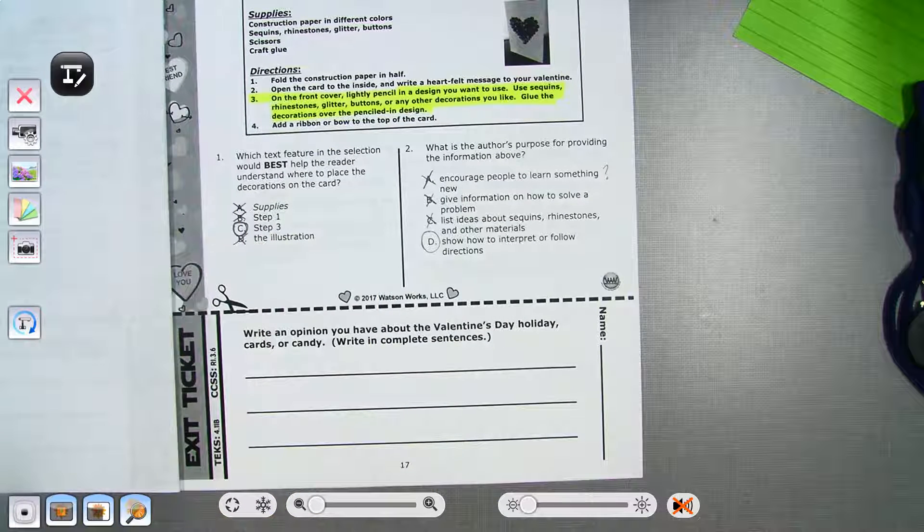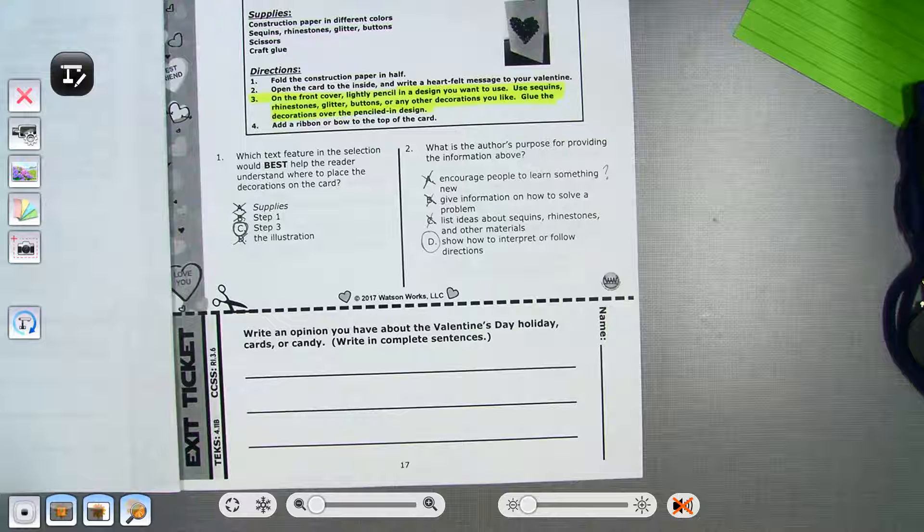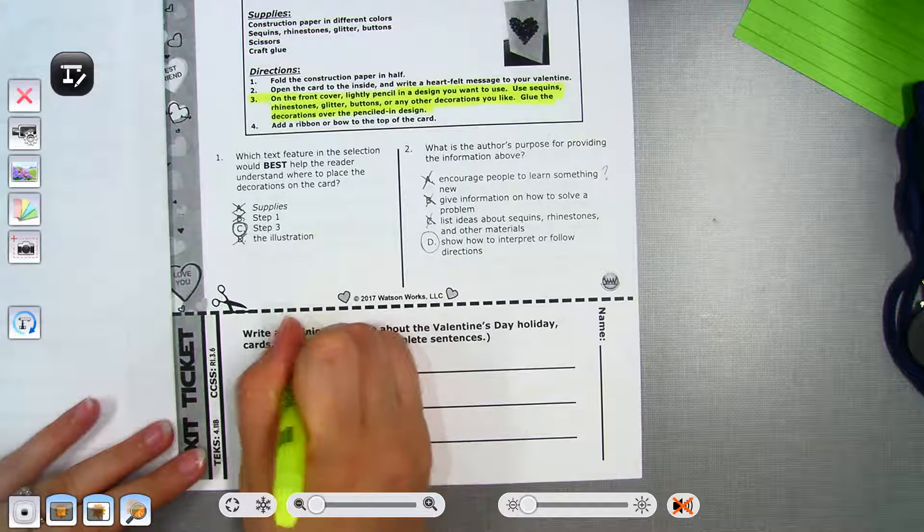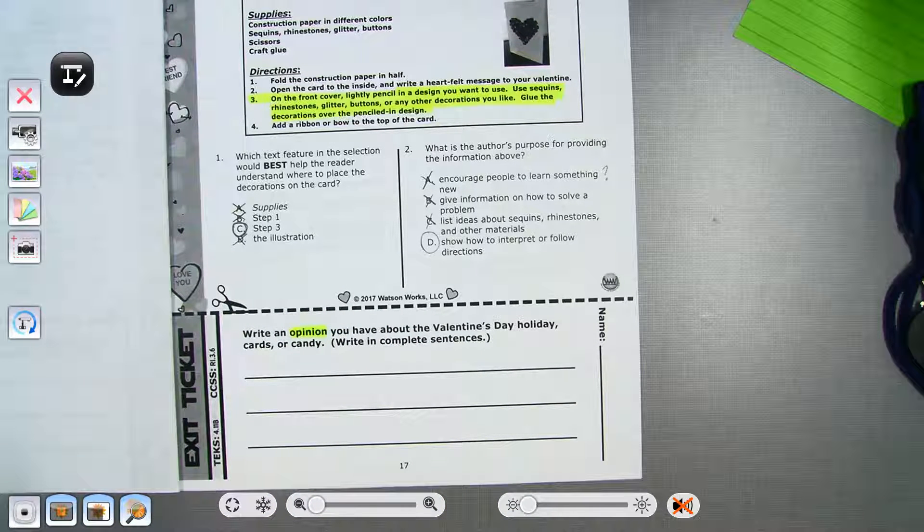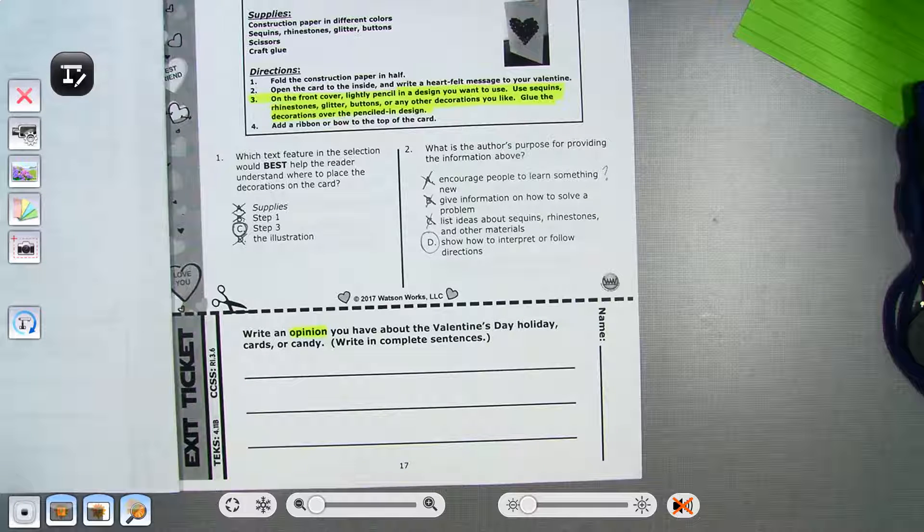So, the exit ticket. This is what you're going to be doing on your own. It says, write an opinion. Okay. So, let's talk about that word, opinion. I want you to highlight or underline that word, opinion. An opinion is what you think about something, how you feel about something. Okay. Not how someone else feels.